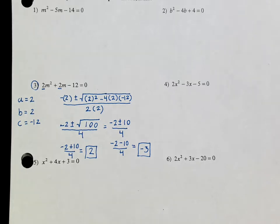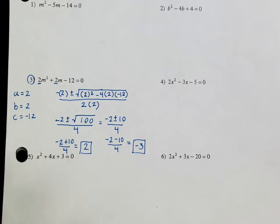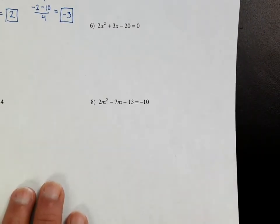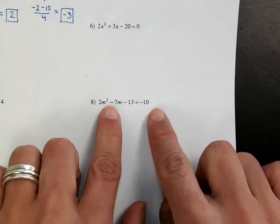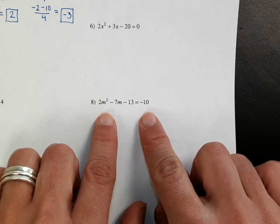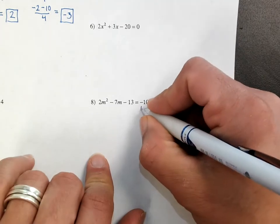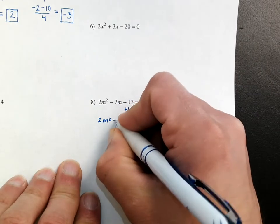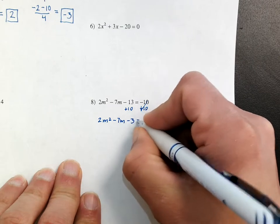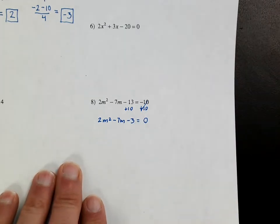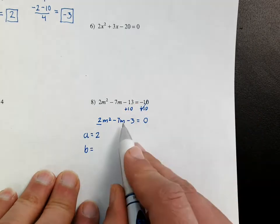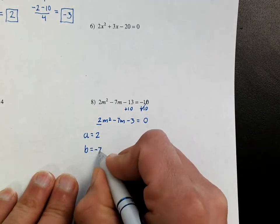Now let me do another one that might be a little bit more confusing for you — number 8. The first thing you need to do with all of these is that if they are not equal to 0, you must do something to set the value equal to 0. In this case I'm going to have to add 10 to both sides so that I can get 2m squared minus 7m minus 3 equals 0. That's the first step you have to do — if you don't do that you cannot use the quadratic formula. Now that I've done that, a is 2, b is negative 7, and c is negative 3.